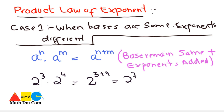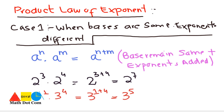One more example: 3 raised to power 1 and 3 raised to power 4. The base 3 remains the same and the powers are added, giving 3 raised to power 5. This is how you deal with two exponential numbers when they multiply and their base is the same but their exponent is different.